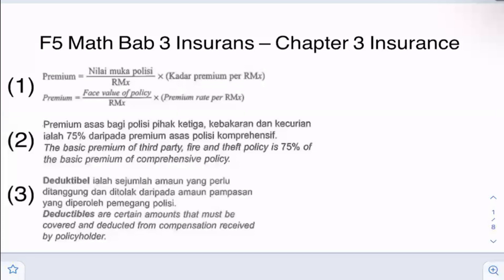First, we have the equation for premium. In order to calculate premium, we will use the face value of the policy. So let's say I have a life insurance which will cover for RM100,000 — that RM100,000 will be my face value of the policy — divided by RM1,000, where X is normally 1,000. So RM100,000 divided by 1,000, then multiplied by the premium rate per RM1,000.